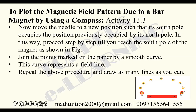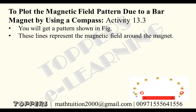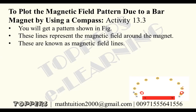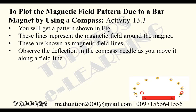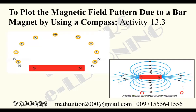Repeat the above procedure and draw as many lines as you can. You will get the pattern shown in the figure. These lines represent the magnetic field around the magnet and are known as magnetic field lines. Observe the deflection in the compass needle as you move it along a field line — the deflection increases as the needle is moved towards the poles. When you are closer to the poles, the deflection will be more; when you are far from the magnet, the deflection will be less.